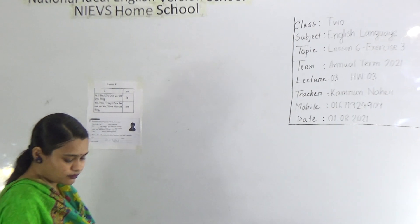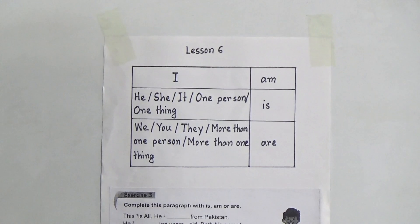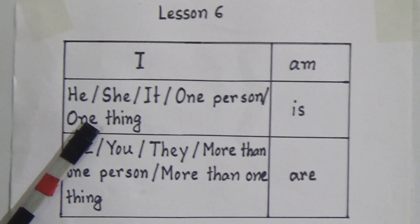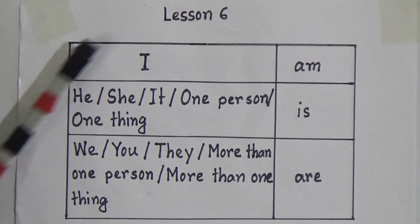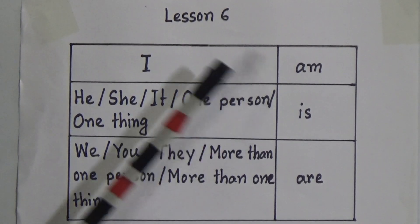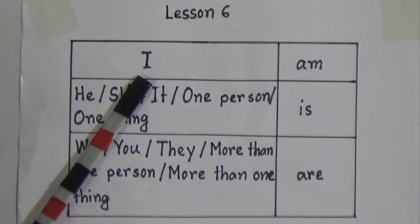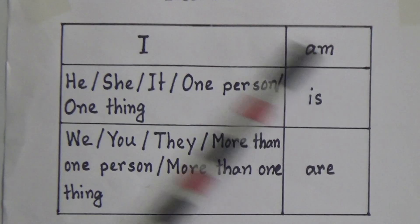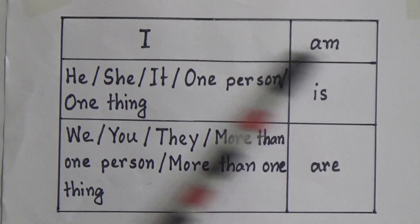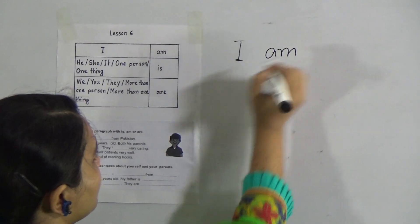First, we will learn the use of 'am', 'is', and 'are' — that means when you will use 'am', when you will use 'is', and when you will use 'are'. I have made a chart for you. If you remember this chart, it will be easy and helpful. We always use 'am' after 'I'. That means 'am' sits after 'I' — so we write: I am.